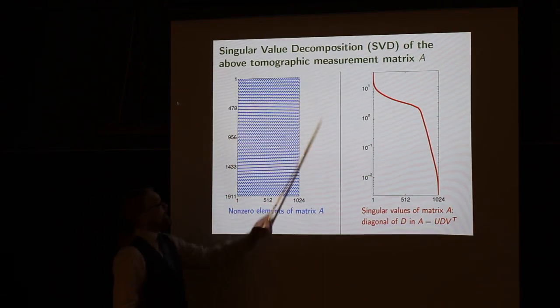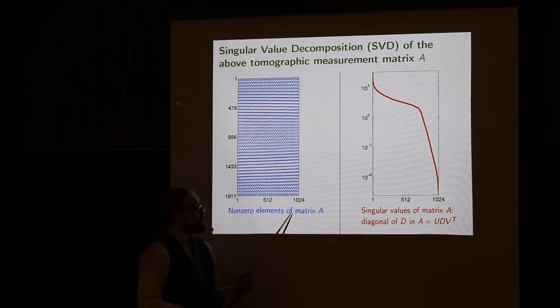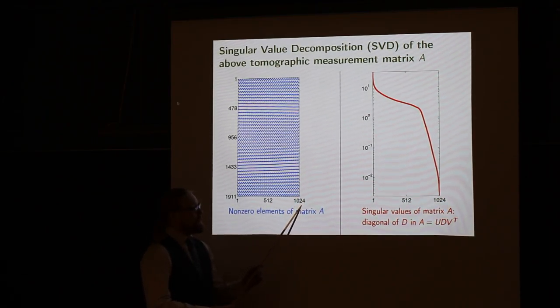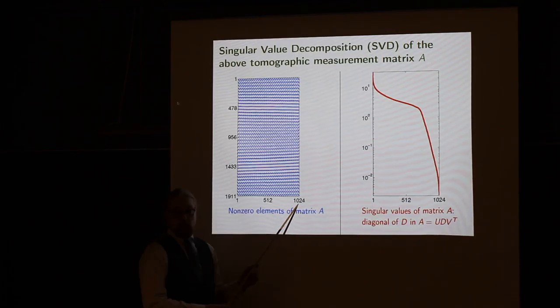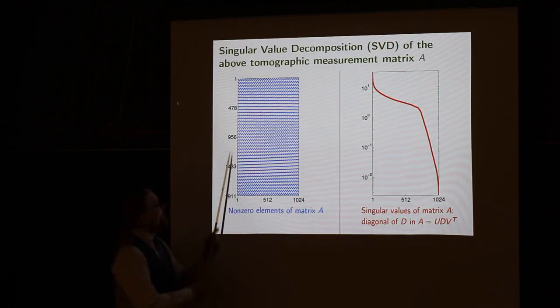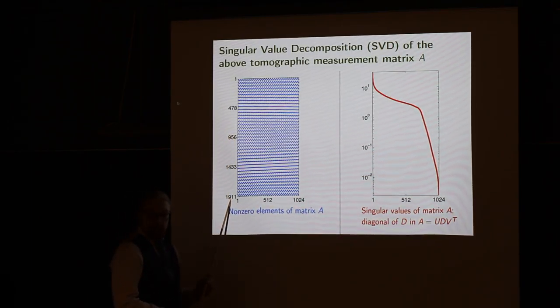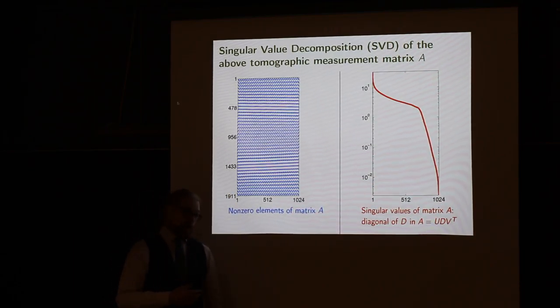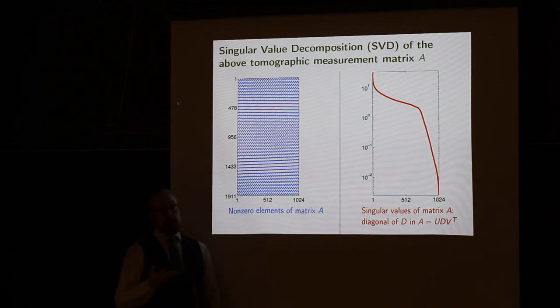So here, if we think about the size of this matrix, our unknown is 32 by 32, so F is a vector in R 1024, because there are 1024 pixels in the discretized F. This is the number of data points, the number of columns in the matrix A.